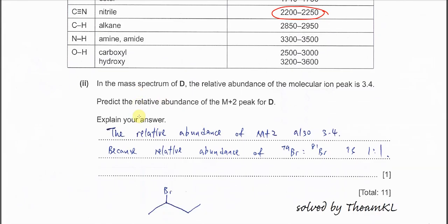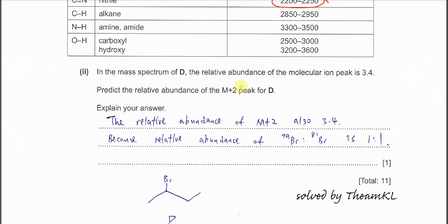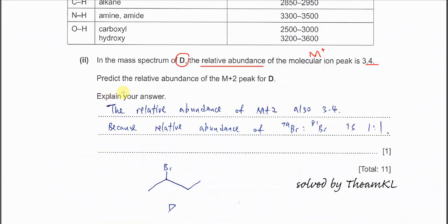In the mass spectrum predict the relative abundance of the molecular ion peak. M positive is 3.4. Spectrum D. D is the 2-bromobutane. Predict the relative abundance of M plus 2. M plus already given. Now ask you M plus 2.